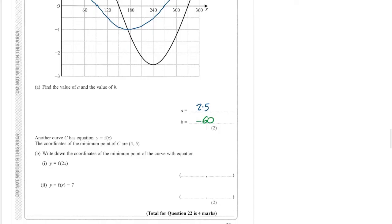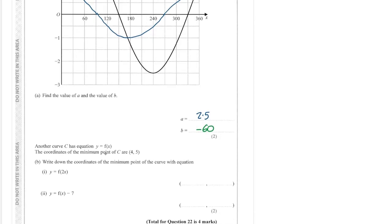Okay, next part of the question, we have another curve with this equation and the coordinates of the minimum point are 4, 5. Write down the coordinates of the minimum point of the curve with this equation. So f of 2x will squash the x-coordinate by a factor of a half. So the x-coordinate becomes 2 rather than 4. And f of x minus 7 means we move the curve down by 7. So the y-coordinate will take 7 from it. So that will be minus 2.